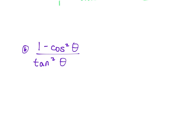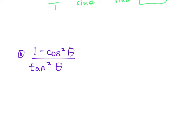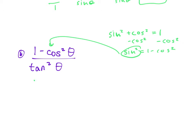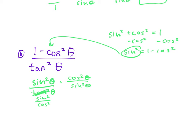We have 1 minus cosine². This is one of our identities: sine² plus cosine² equals 1, which rearranges to sine² equals 1 minus cosine². So we substitute sine² in. Now we have sine² over tangent². Change tangent to sine over cosine, giving sine² over (sine²/cosine²). Keep, change, flip: multiply by cosine² over sine², the sines cancel, leaving cosine² θ.